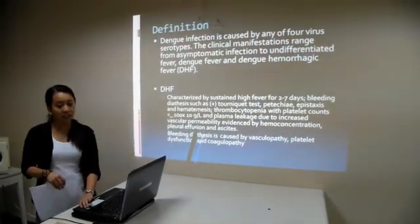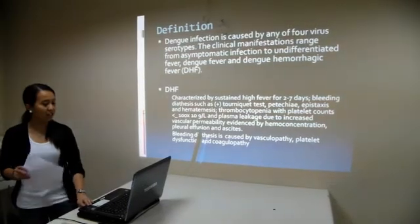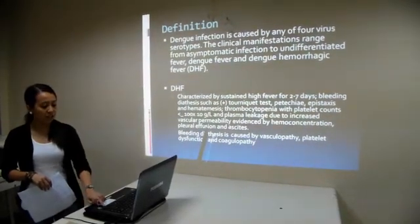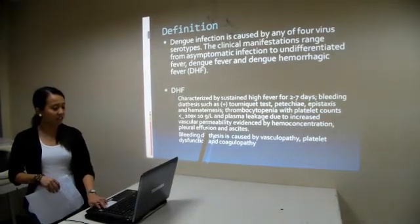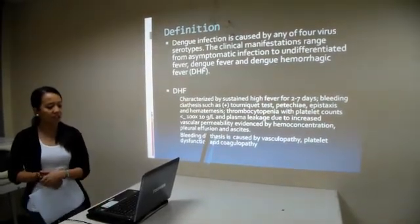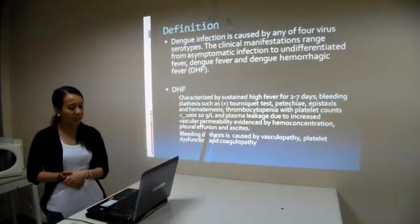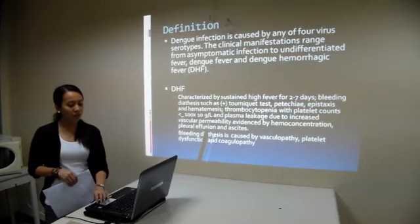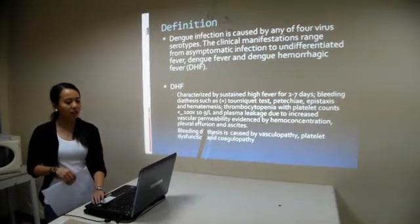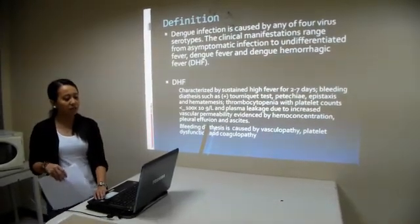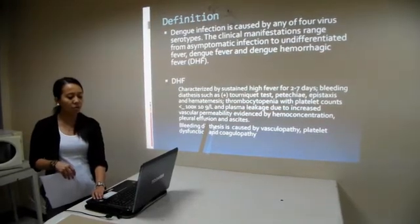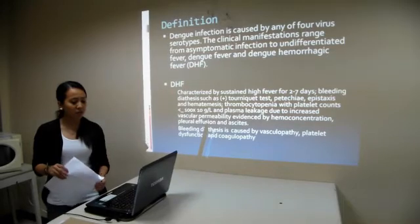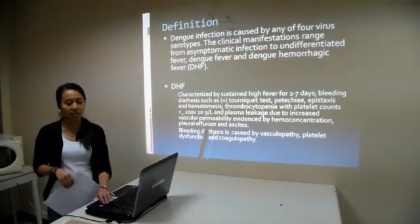Specifically, Dengue hemorrhagic fever is characterized by sustained high fever for two to seven days, with bleeding diathesis such as positive tourniquet test, petechiae, epistaxis, and hematemesis, thrombocytopenia with platelet counts of less than 100 x 10 per microliter, and plasma leakage due to increased vascular permeability, as evidenced by hemoconcentration, pleural effusion, and ascites.